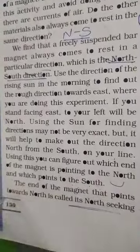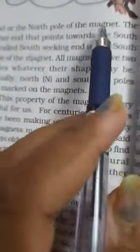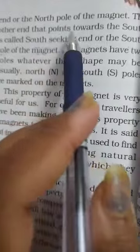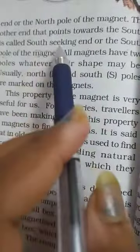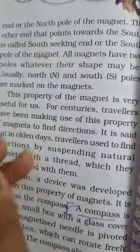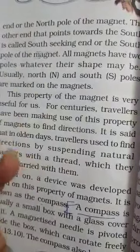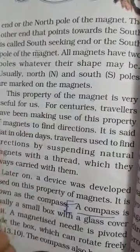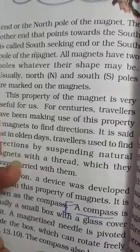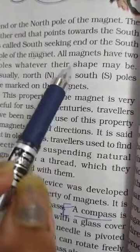The end of a magnet that points toward north is called north seeking end or the north pole of the magnet, and the other end that points toward the south is called south seeking end or the south pole of magnet. In the magnet there are two poles, south and north.